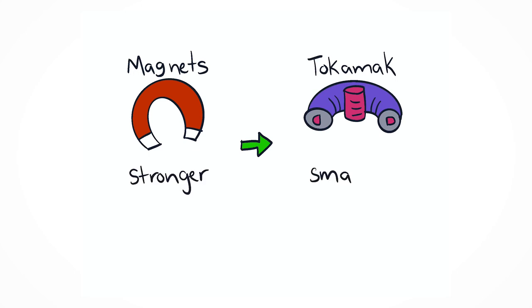With stronger magnets, a fusion device can be smaller, cheaper, and produce more power than devices with weaker magnets.